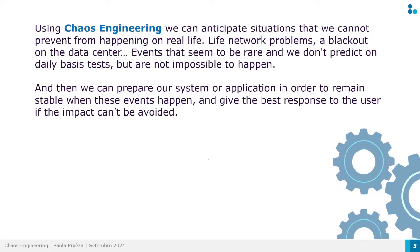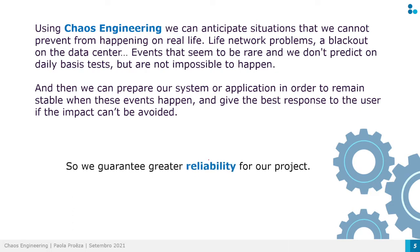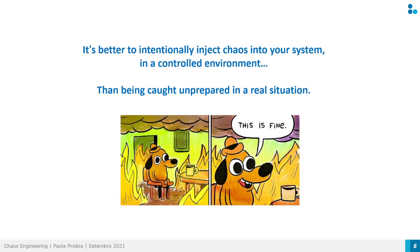That means if the impact on the system in production is something we cannot avoid — like a network problem — we need to think about the best response for the user and decrease the impact on the user when these situations happen. So we guarantee greater reliability and greater confidence in our projects. It's better to intentionally inject chaos into our system in a controlled environment than to be caught unprepared in a real situation.